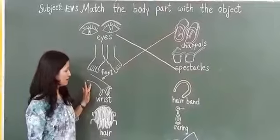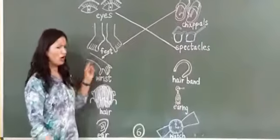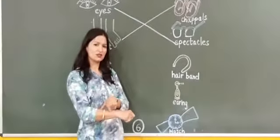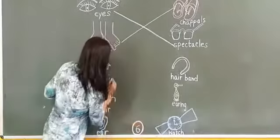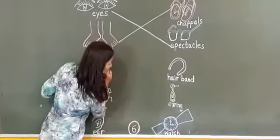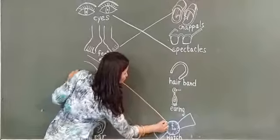And what is this? Wrist. What we are wearing in our wrist? Yes, watch. Now teacher is going to match wrist with the watch.